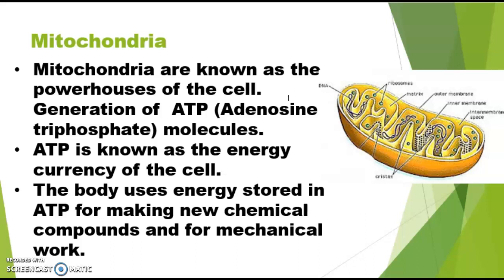One more important thing is that mitochondria has its own DNA. Most of the DNA is present inside the nucleus, but mitochondria also contains some amount of DNA. In fact, there are only three organelles in a cell that have their own DNA: nucleus, mitochondria, and — as I will discuss — chloroplast. So all the required proteins are produced here through their own DNA.